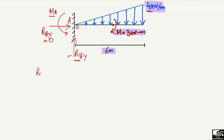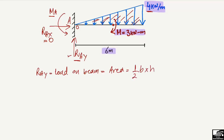RAY will be equal to the total load acting on the beam. The total load is equal to the area of the load diagram, which is a simple triangle. So it is equal to half base times height: half × 6 meters × 4 kilonewtons per meter. The meters cancel, giving us 12 kilonewtons.